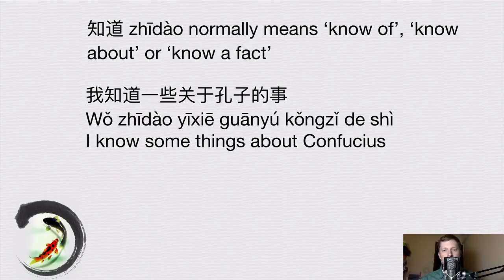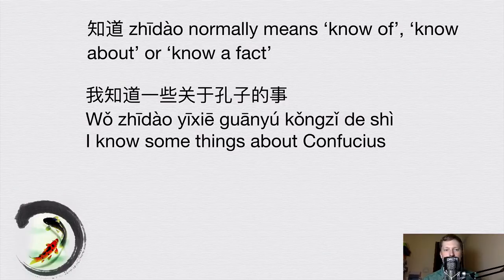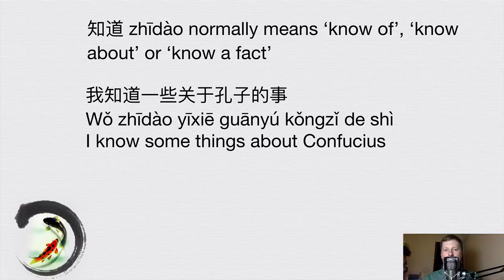Another example: 我知道一些关于孔子的事儿 — literally 'I know some things about Confucius.' In this sentence we're talking about knowing a fact or some knowledge, therefore we use 知道, not 认识.